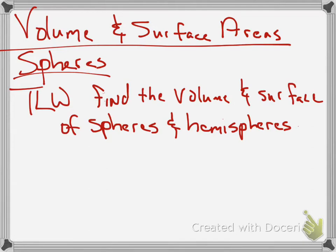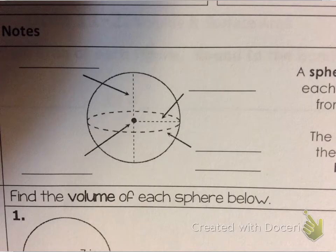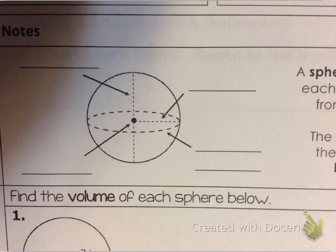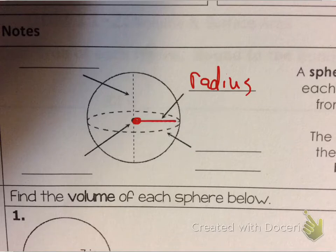If you look at the worksheet you should be able to see a picture of a sphere, and it's going to talk about the parts of a sphere. First off, the sphere is a solid in which each point is equidistant from the center — so it's like a circle in all sorts of directions. There is a radius, which goes from the center straight out to any edge of the sphere.